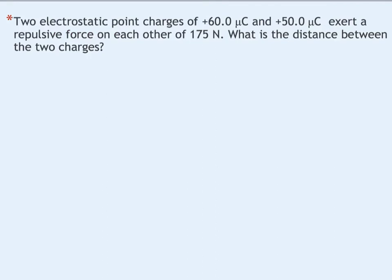Let's look at an example. If we have two electrostatic point charges — electrostatic just means they are charged and not moving — and we have 60 microcoulombs and 50 microcoulombs. Remember, micro is one of our prefixes and it means 10 to the negative 6th. They are positive charges, which is why the plus sign is specifically there. They exert a repulsive force on each other of 175 newtons.